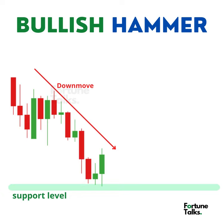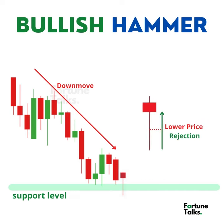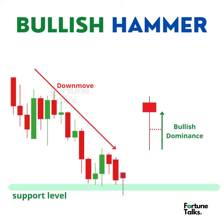Hammer candlesticks typically occur after a price decline or downtrend, where the bears are dominant. The hammer pattern near a demand zone shows the rejection of lower prices, which indicates that the bulls attempted to break the prices from falling further down. The long shadow indicates the bullish dominance over bears.